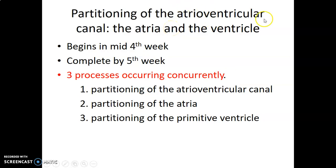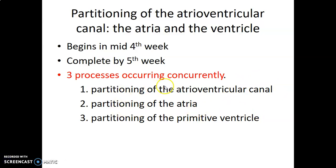To partition the atrioventricular canal, atria, and ventricles: this begins at mid-fourth week and is completed by the fifth week, involving three processes. First, you partition the atrioventricular canal into right and left canals. Then you separate the left from the right atria, and the left from the right ventricle.